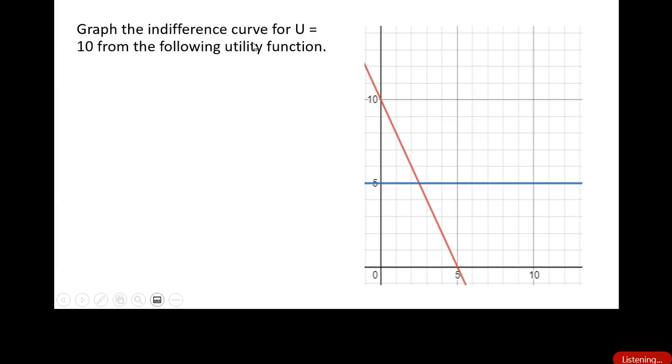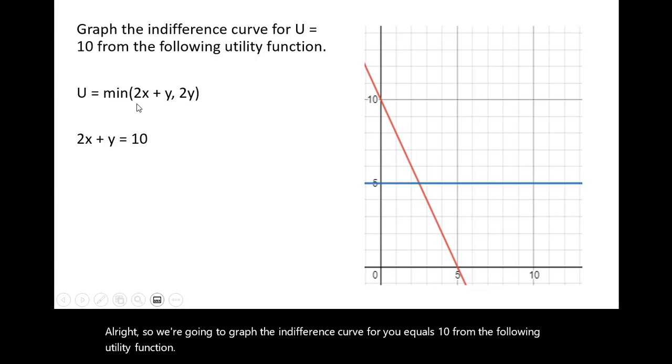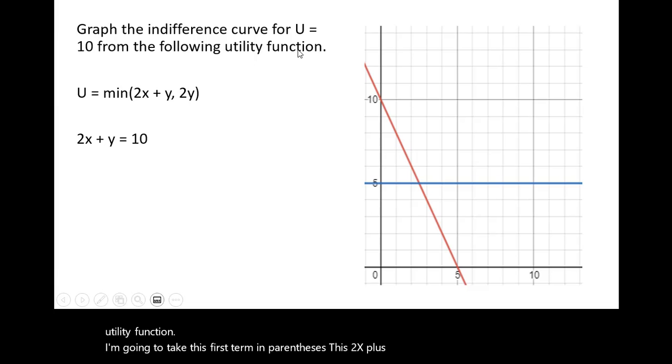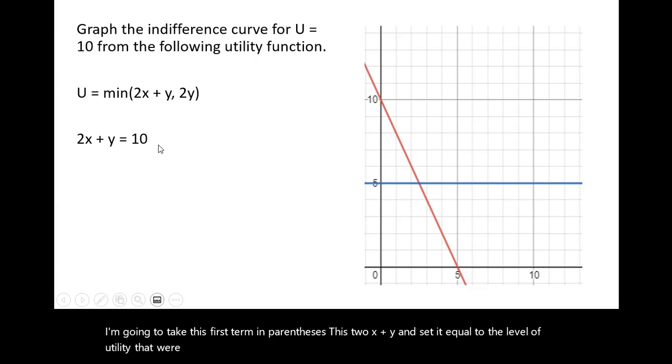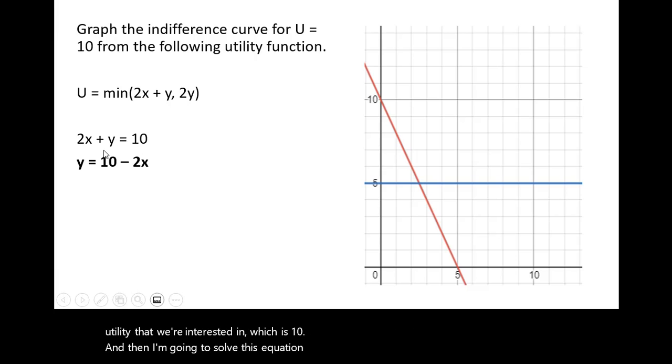We're going to graph the indifference curve for u equals 10 from the following utility function. I'm going to take this first term in parentheses, this 2x plus y, and set it equal to the level of utility that we're interested in, which is 10. And then I'm going to solve this equation for y, subtracting 2x from both sides. We have this equation. We're going to go ahead and graph it.